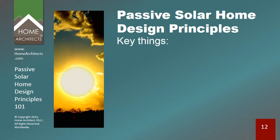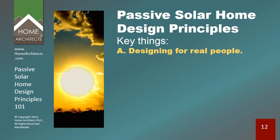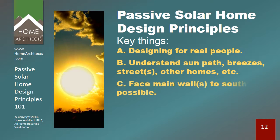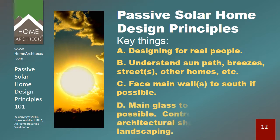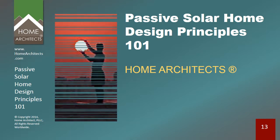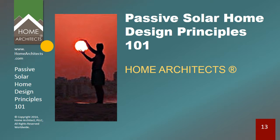So there are several key things involving passive solar home design. First, designing for real people — this is something you don't just take off the Internet; it needs to be very carefully programmed to make sure the considerations needed for a specific client are handled. Next, you need to understand the specifics of the sun path, breezes, streets, and other homes and activities and environmental features, both natural and man-made, so that you can respond to those with your design. Next, face the main walls to the south if at all possible, and put the main glass also towards the south if possible. Control the sun with architectural shade devices. This has been Passive Solar Home Design Principles 101 by the Home Architects. If anyone has any further questions, you're welcome to contact me.